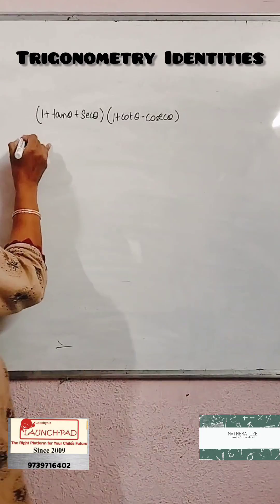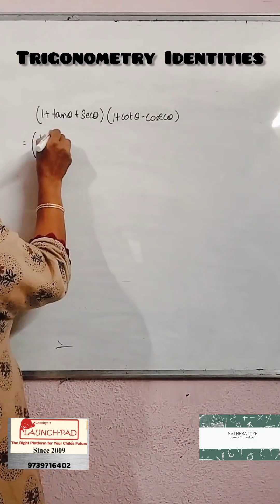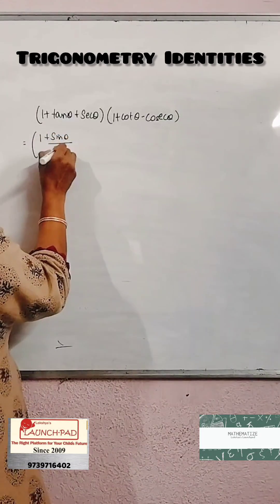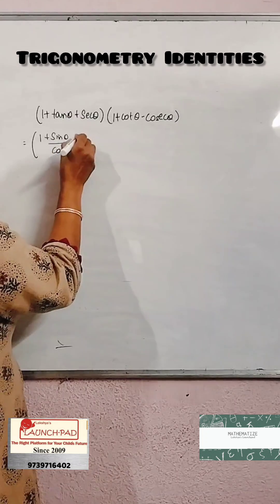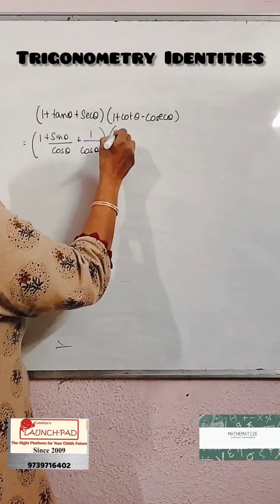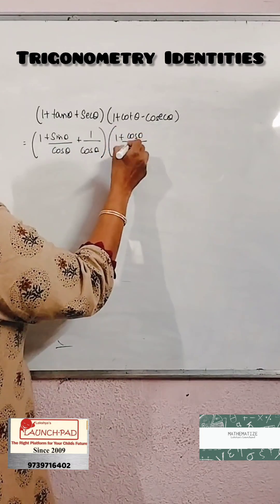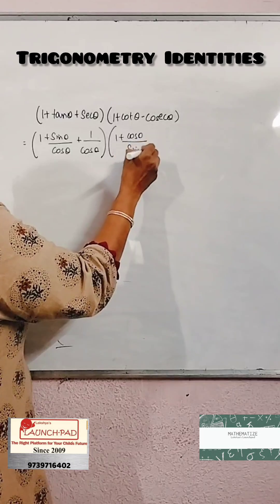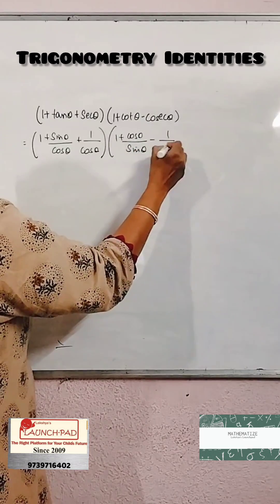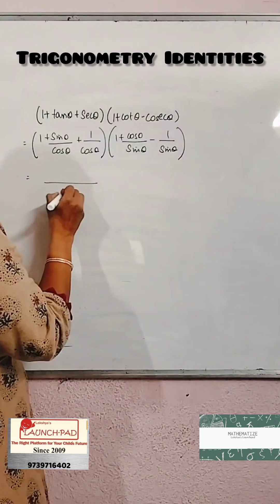We need to evaluate (1 + tan θ + sec θ) into (1 + cot θ - cosec θ). We convert tan θ and sec θ into sine over cos and 1 over cos. Similarly, cot θ is changed into cos over sine, and cosec θ is 1 over sine.